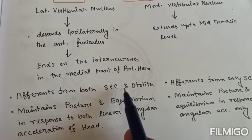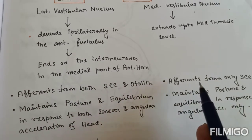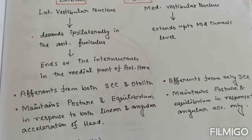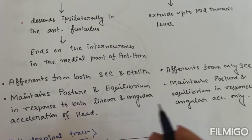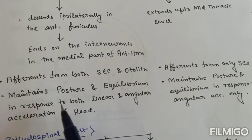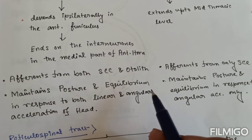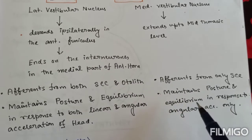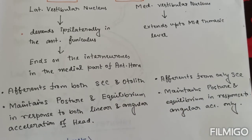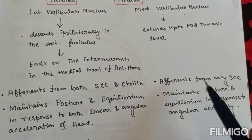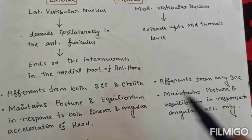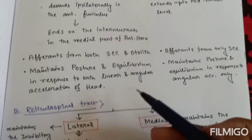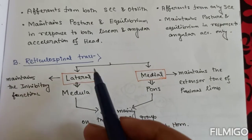For the lateral vestibulospinal tract, afferents come from both the semicircular canal and otolith. For the medial, afferents come from only the semicircular canal. The lateral tract is mainly involved in maintaining posture and equilibrium in response to both linear and angular acceleration of the head. The medial tract maintains posture and equilibrium in response to angular acceleration only, because it receives afferents only from the semicircular canal.